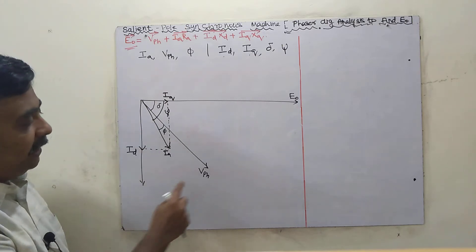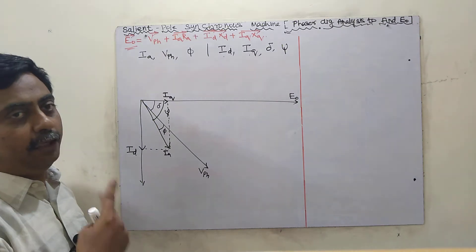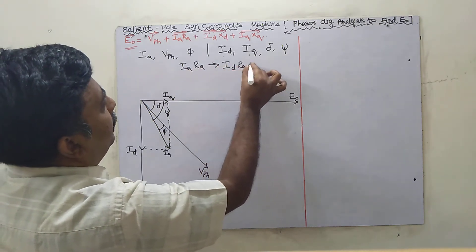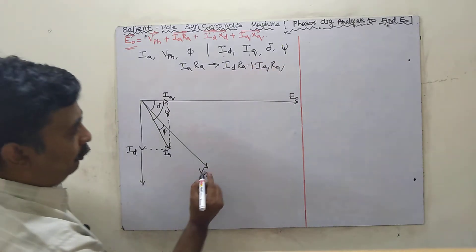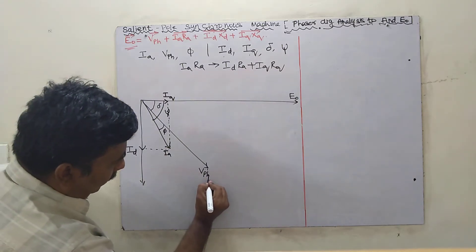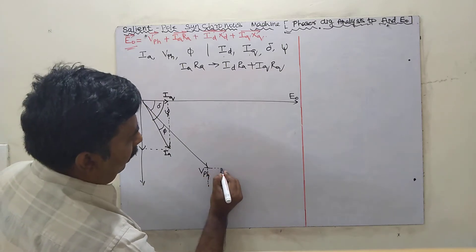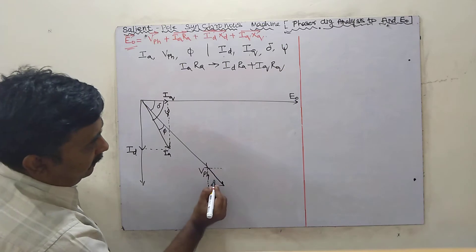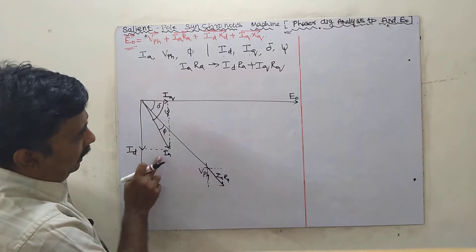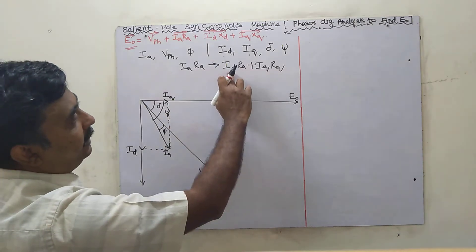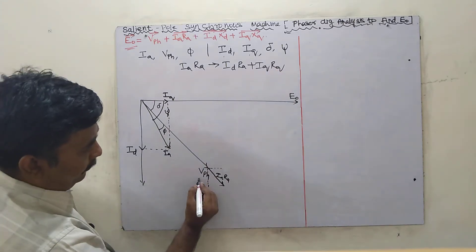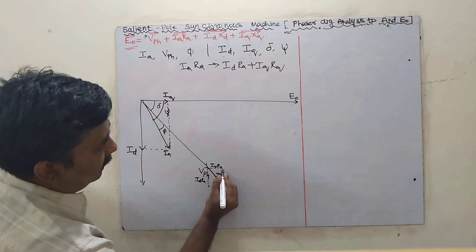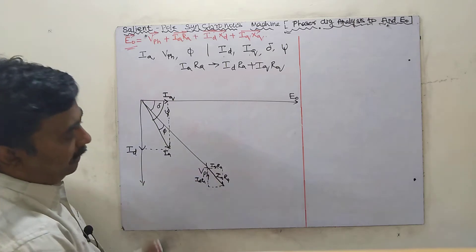Along with this, IERA can also be divided into two parts. IA into RA can be written as ID·RA plus IQ·RA. ID·RA will be in the ID direction and IQ·RA will be in the IQ direction. Adding these two things, the result will be in the IA direction. So IA·RA and IA will be in the same direction — both are parallel. This is IA·RA.